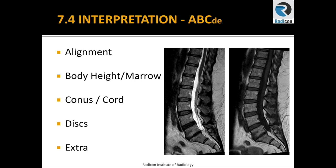My checklist is simple — as simple as A, B, C, D. A for alignment, B for body height, C for cord and conus, D for discs, and E for extras. It is simple to use, very relevant to clinical presentation, and allows you to give instant opinion or commentary as soon as you start looking at a scan, such as in a medical meeting, patient consultation, and academic discussions.